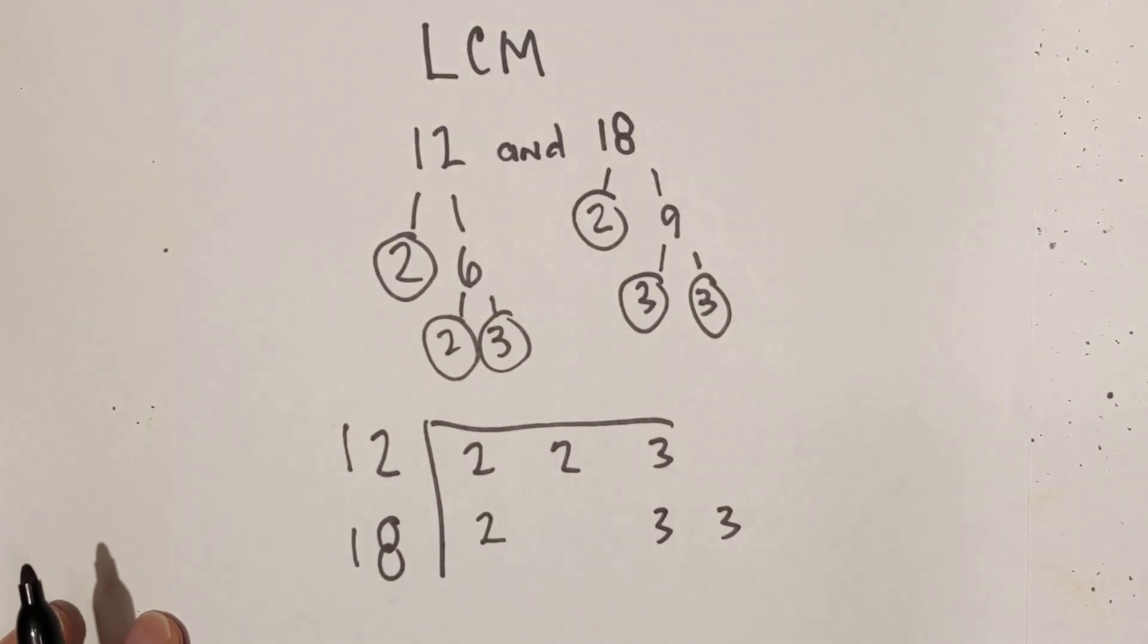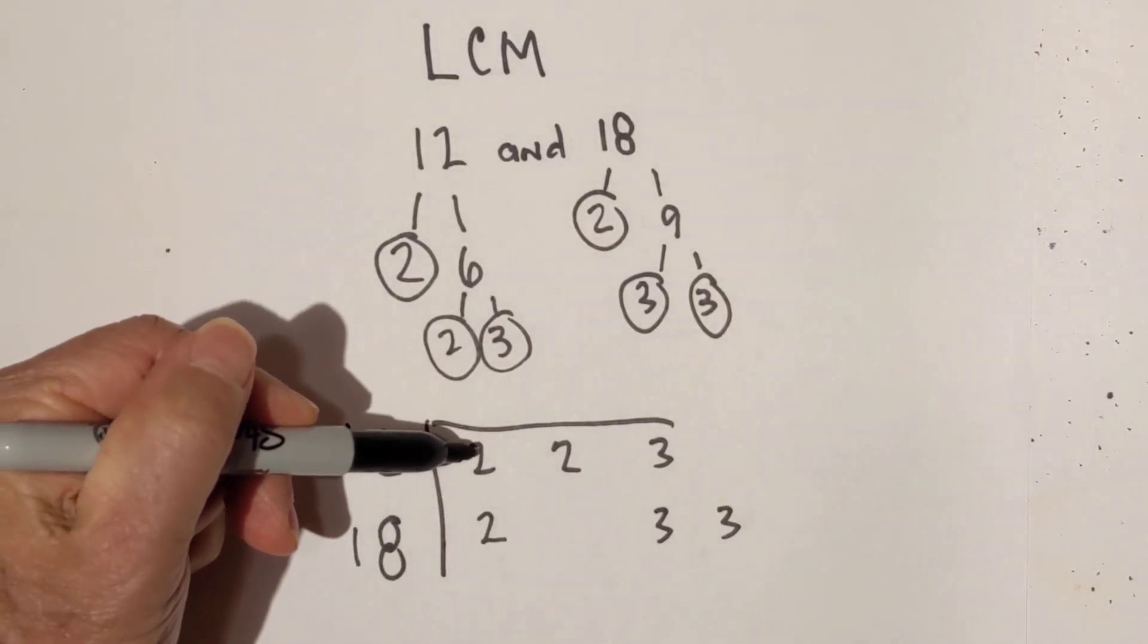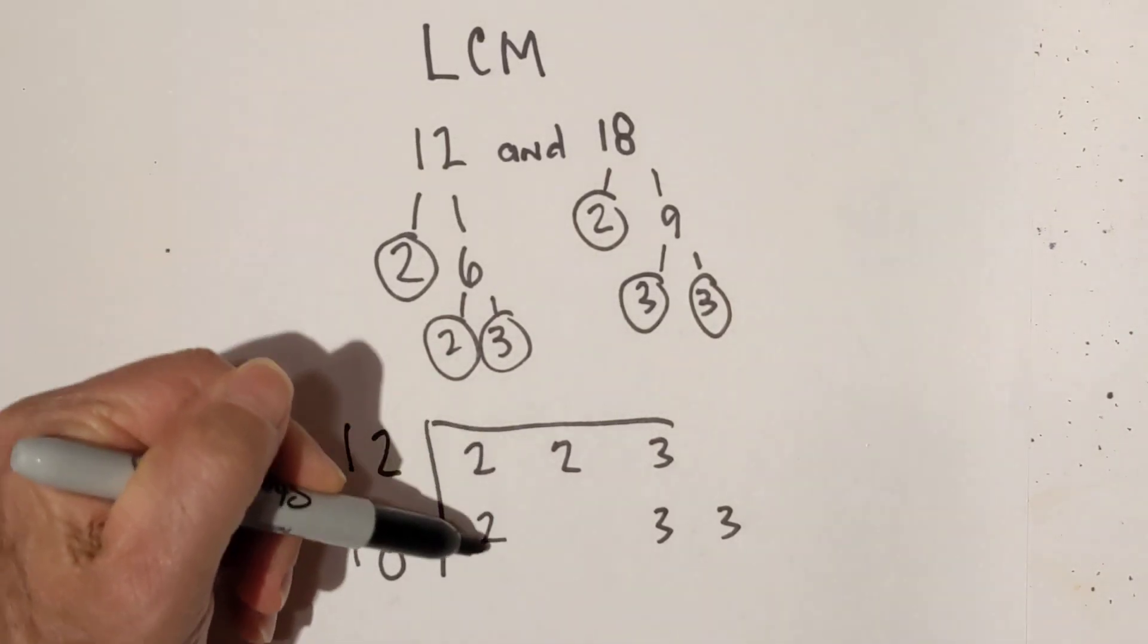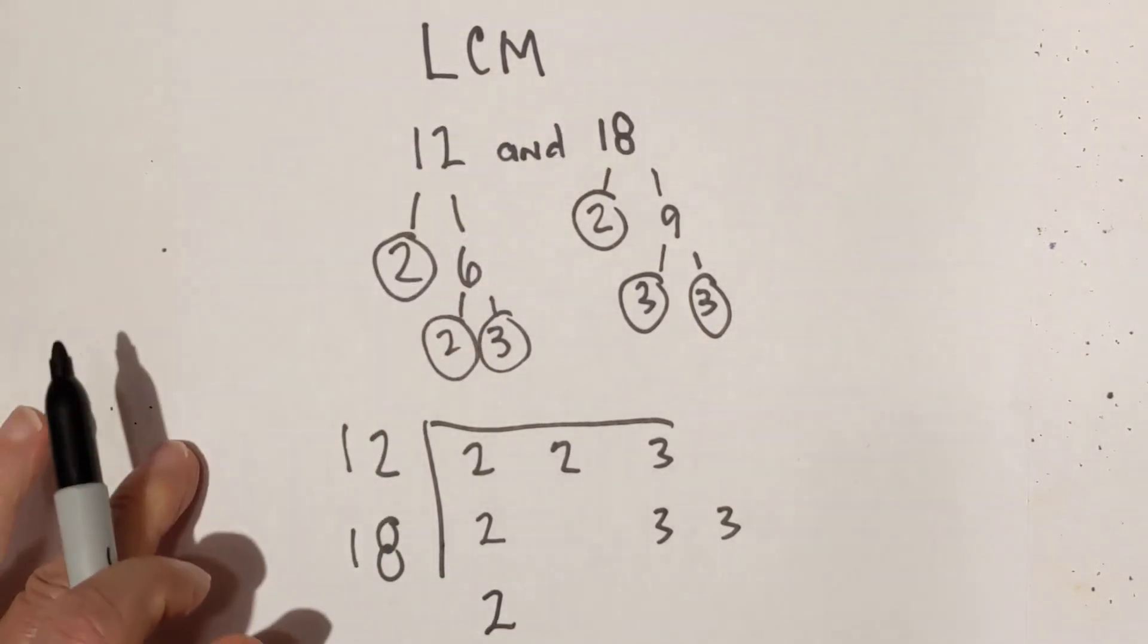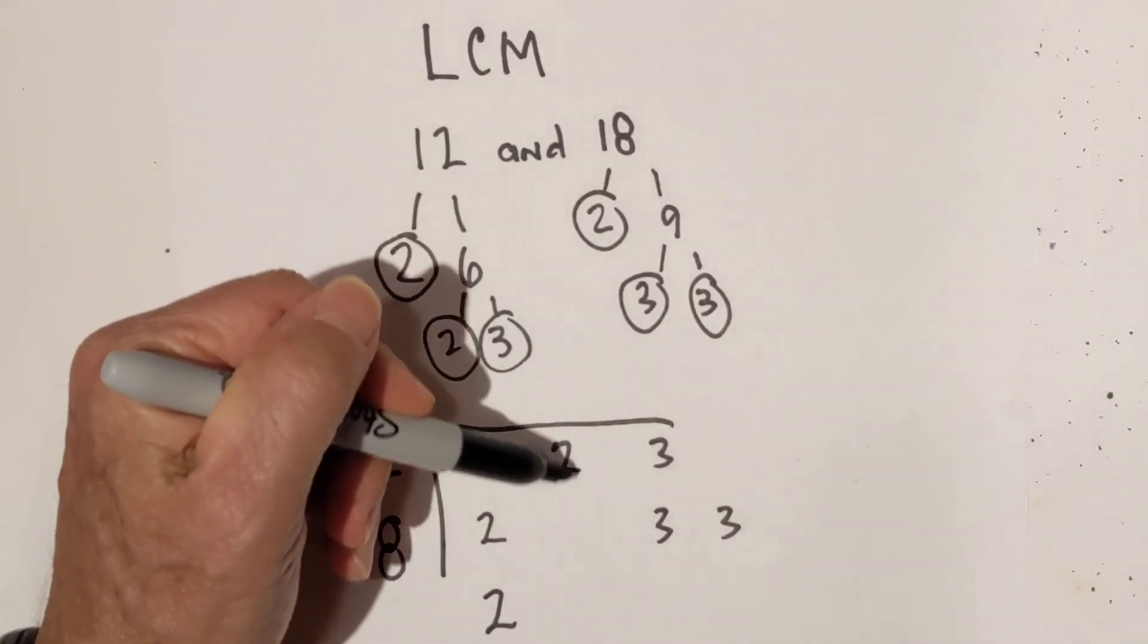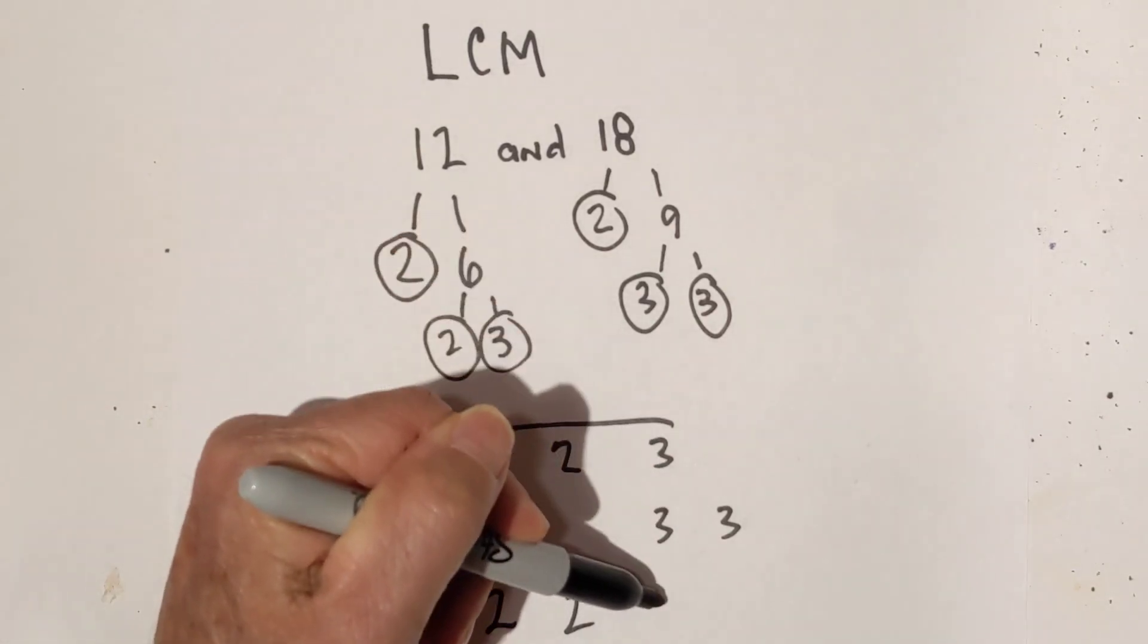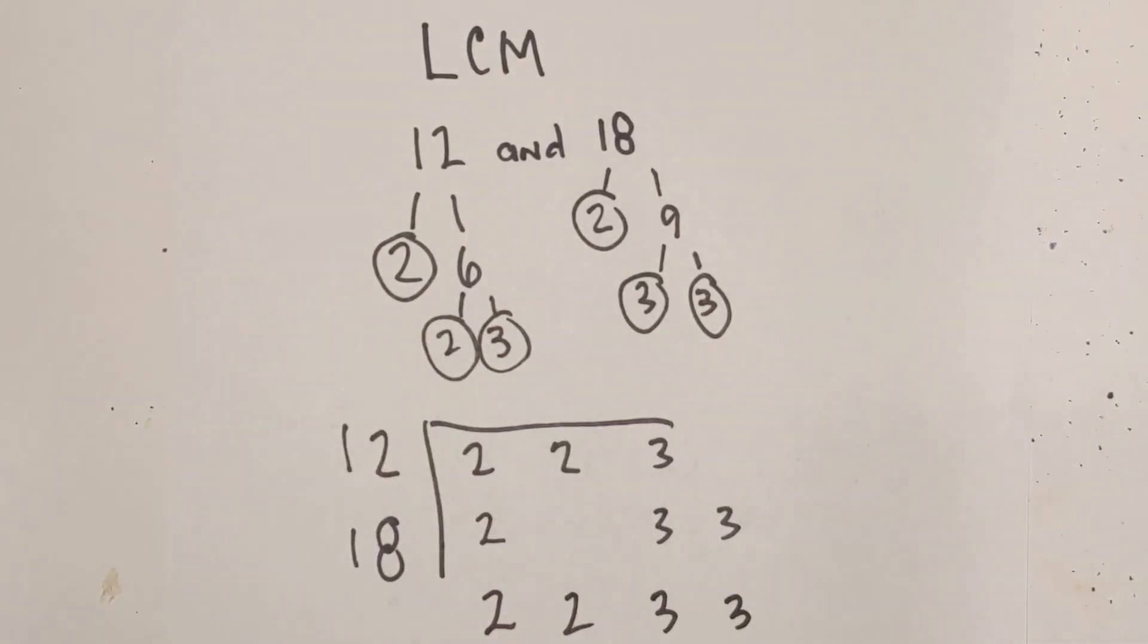So now for the LCM, all you do is basically multiply these numbers together. But if you have two of the same numbers, you just bring down 2 because we only have a pair of numbers. So I'm going to bring down 1, 2 here, and a 2 there, 3 here, and a 3 there.